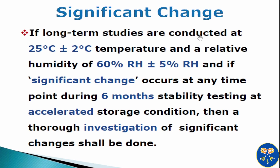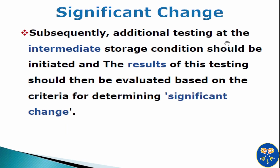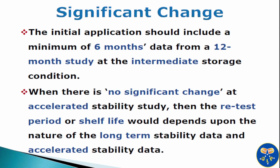If long term studies are conducted at 25°C ±2°C temperature and a relative humidity of 60% RH ±5% RH and if significant change occurs at any time point during 6 months stability testing at accelerated storage condition, then a thorough investigation of significant changes shall be done. Subsequently, additional testing at the intermediate storage condition should be initiated and the results of this testing should then be evaluated based on the criteria for determining significant change. The initial application should include a minimum of 6 months data from a 12-month study at the intermediate storage condition.